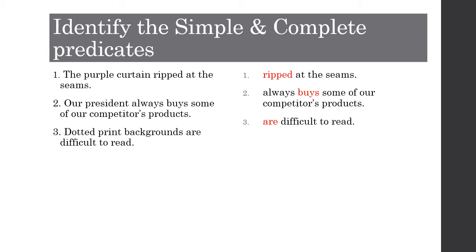Now let's identify the simple and complete predicates. 'The purple curtain ripped at the seams' — the complete predicate is 'ripped at the seams' and the simple predicate (the verb) is 'ripped.' 'Our president always buys some of our competitors' products' — the complete predicate is 'always buys some of our competitors' products' and the simple predicate is 'buys.' 'Dotted print backgrounds are difficult to read' — the complete predicate is 'are difficult to read' and the simple predicate is 'are.'